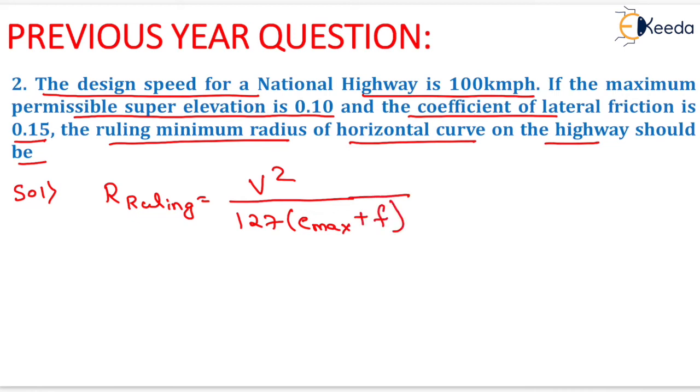That will be 0.15, the value of small f. Now we will put the values of V, Emax, and F: 100 squared upon 127 times, in bracket, Emax is 0.10 and the value of small f is 0.15. On solving this, we get the value of R ruling which equals 314.96 meters, which will be rounded off to the next integer, that is 315 meters.